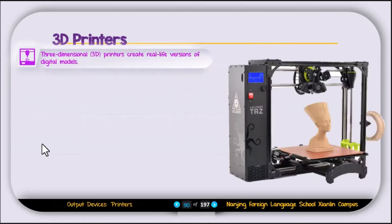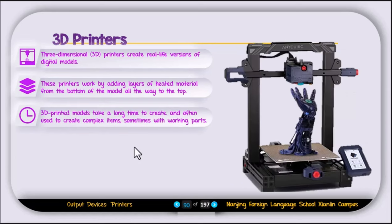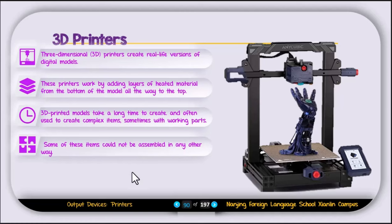The next type of printer is the 3D printer. A 3D or three-dimensional printer creates a real-life version of a digital model by adding layers of heated material from the bottom all the way to the top. 3D printed models take a long time to create and are often used for complex items, sometimes with working parts. Some of these items could not be assembled in any other way, which is why they are created in parts.